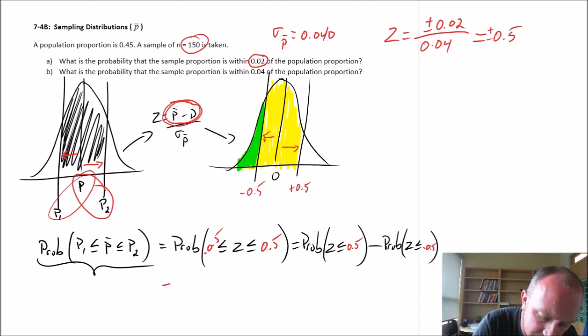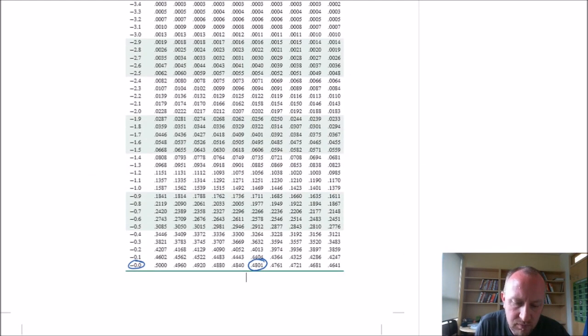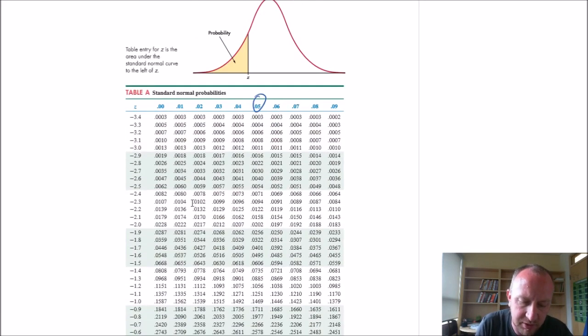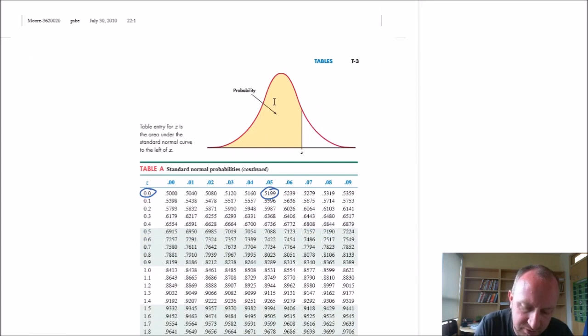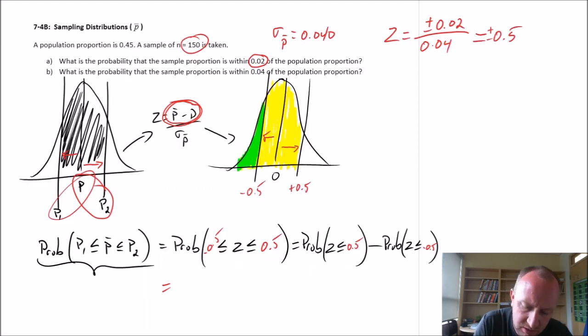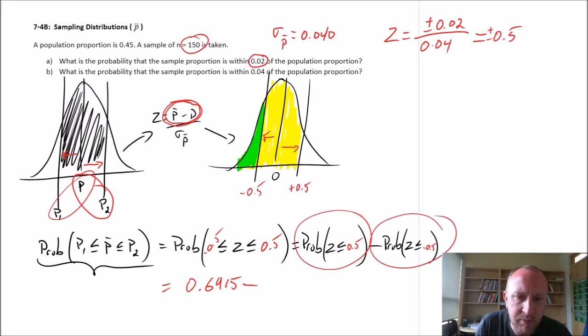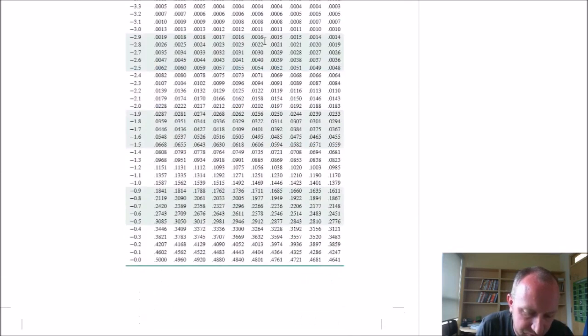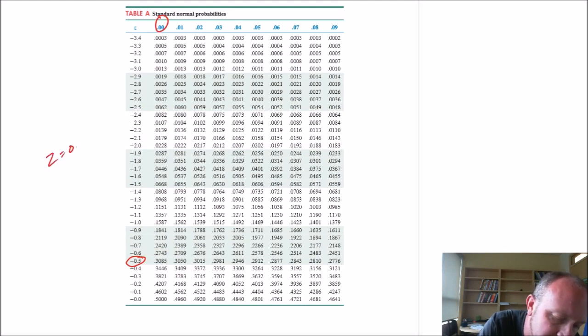Let's look up our positive 0.5. So there's positive 0.5, 0.6915. Now we want to look up our negative 0.5. So coming up here, our negative 0.5, and that third decimal place is 0, right? Because z is 0.050. So that's why this third decimal here is 0. That gives us a value of 0.3085.